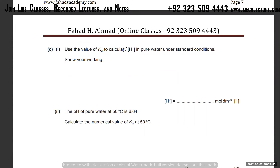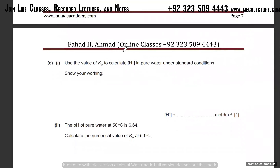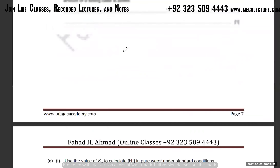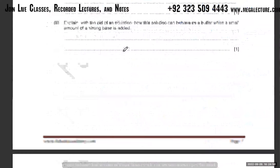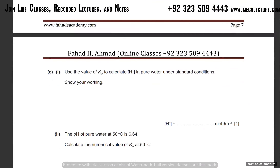Now Kw: calculate [H⁺] in pure water under standard conditions. Use the value of Kw. Water ionizes to produce two ions: H⁺ and OH⁻. Kw = [H⁺][OH⁻]. Since water is the solvent, it's taken as 1. That's Kw.